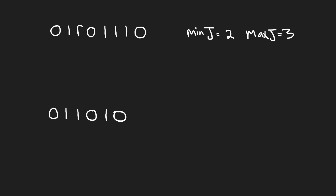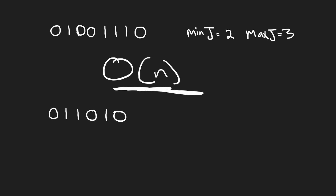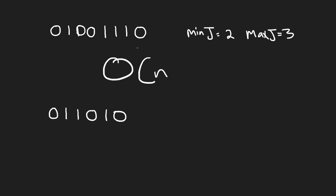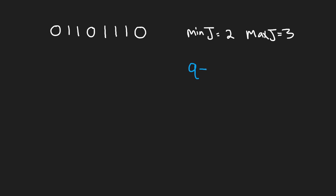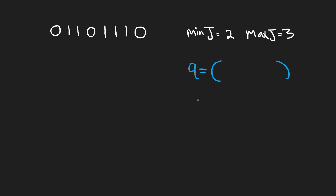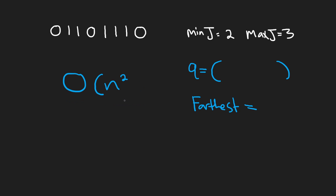Now let me change the example slightly — changing one of the ones into a zero — to illustrate why we can do this in O(n) time with BFS: we're not going to revisit the same values twice. We maintain a variable called 'farthest', which tracks the farthest position we've added to our queue so far. This prevents us from revisiting positions and keeps the time complexity at O(n) instead of O(n²).